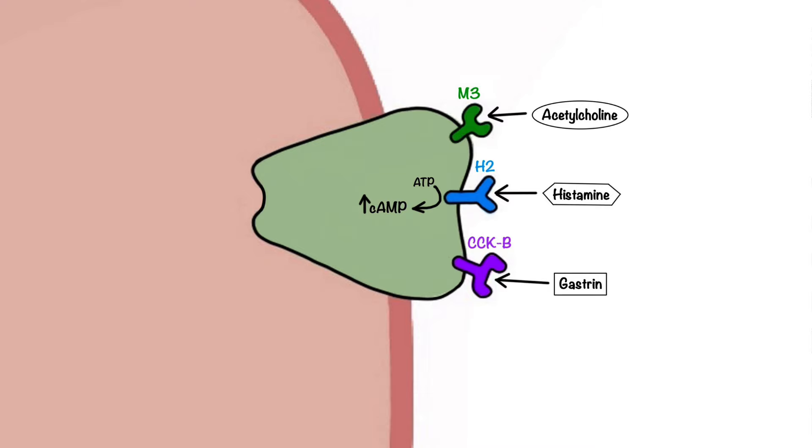These independent pathways then converge to activate protein kinase cascade, that in turn triggers translocation of hydrogen-potassium ATPase, also known as the proton pump, from cytoplasm to the apical surface.